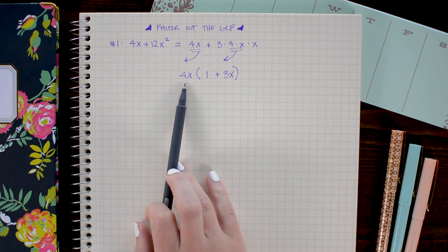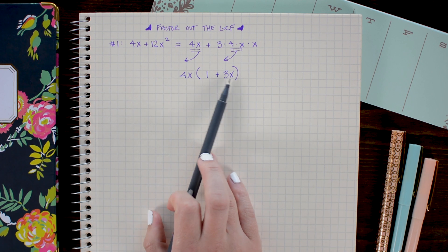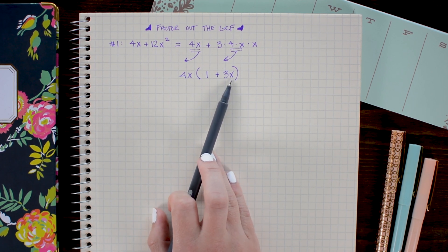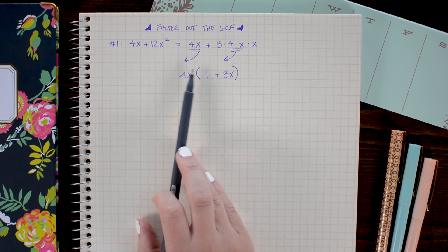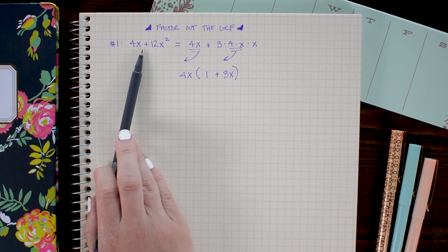So our final answer for this first one is 4x times 1 plus 3x. And if you wanted to check your answer, which I would recommend when you're first beginning, you simply need to distribute the 4x back through and make sure that you get the original expression.